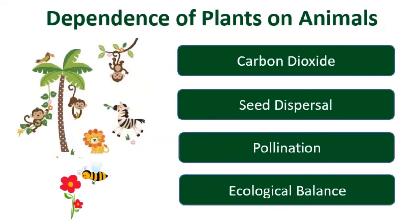At the same time, plants too are dependent on animals. Majorly for the gas carbon dioxide — all living beings, while breathing, give out carbon dioxide, which is used by plants for photosynthesis. Then for seed dispersal: as studied in Lesson 3, plants are dependent on animals for dispersing their seeds. And for pollination, which is the transfer of pollen grains from one flower to another, done by certain insects like honeybees and butterflies. So plants are dependent on animals, and at the same time, animals are dependent on plants.